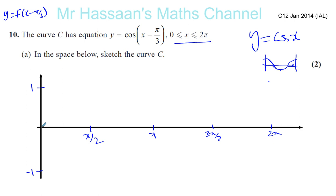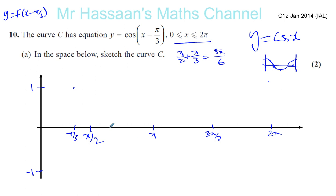So, for example, the top point was at (0, 1) — now it's going to be at (pi over 3, 1). Let's mark pi over 3 on the axis. Where it hit 0 at pi over 2, now it's going to hit 0 at pi over 2 plus pi over 3, which equals 5 pi over 6 — that's less than pi, so it's going to be somewhere before pi. So that's where it hits 0: at 5 pi over 6.